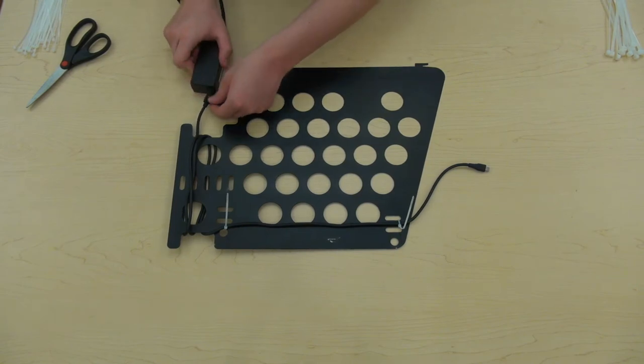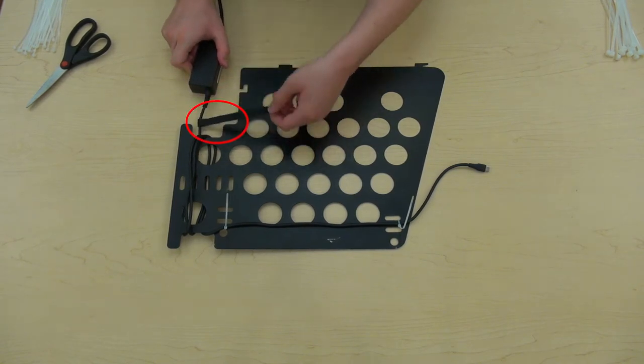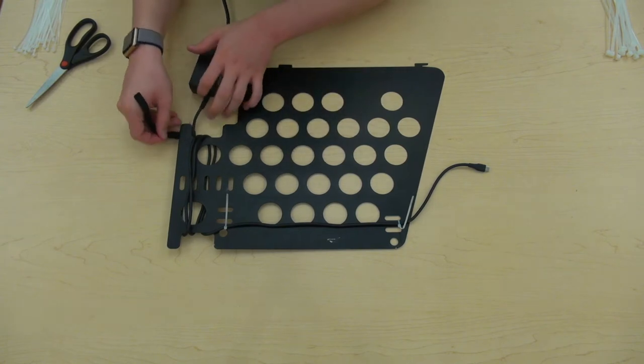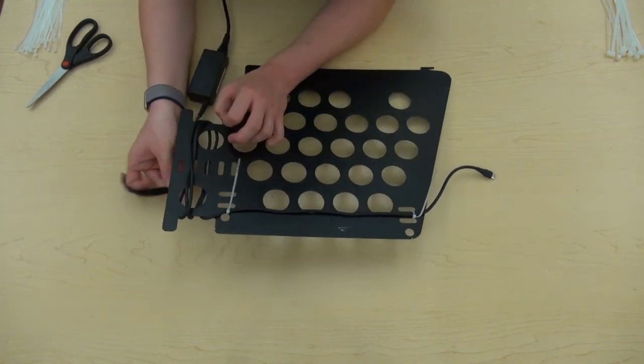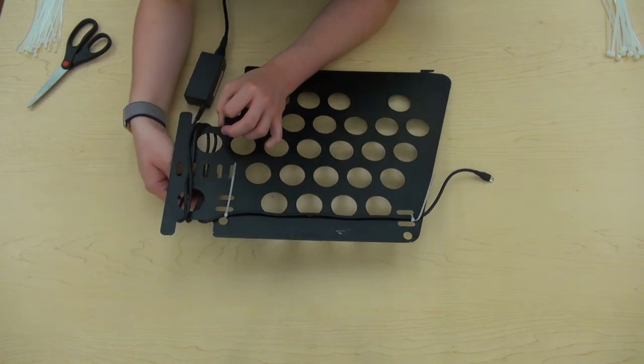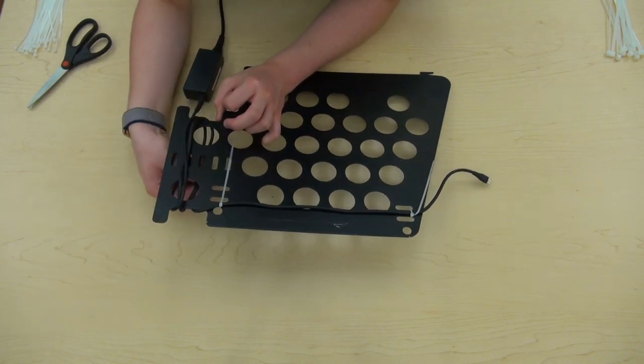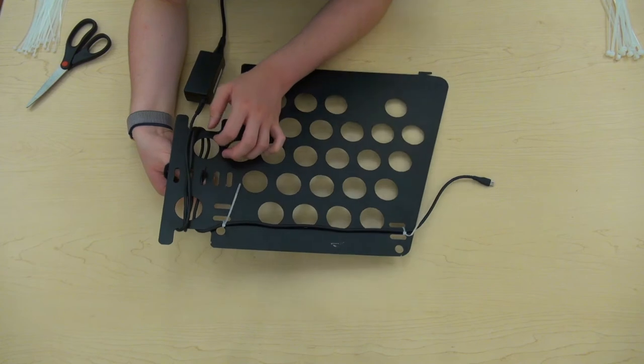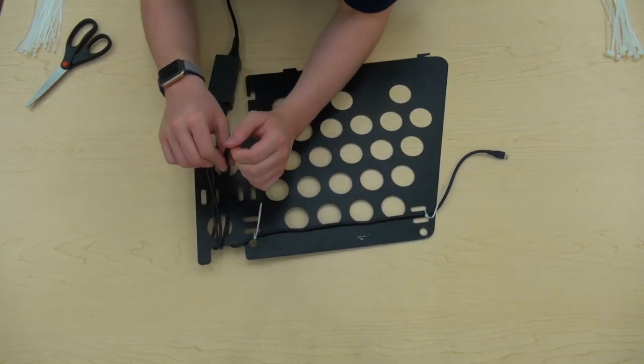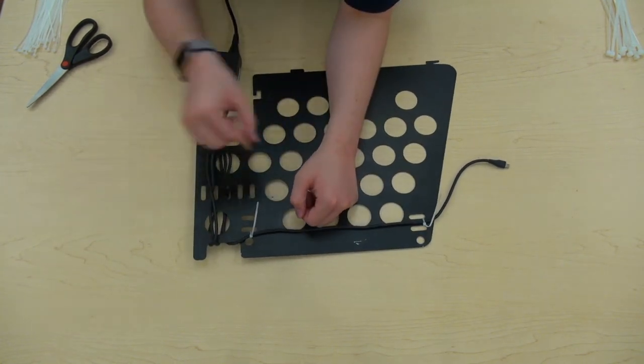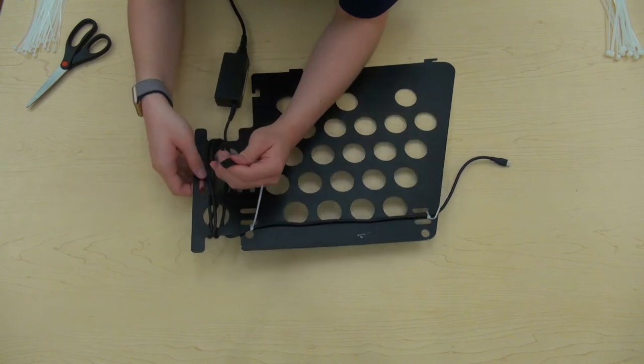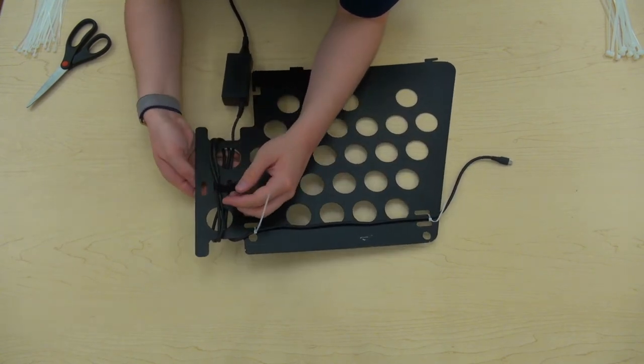If your cable has a velcro tie as shown here, now is the time to use this tie by wrapping it between two of the rear slots, ensuring you get all of the cables in the bunch. If your cable doesn't have a velcro tie, you can instead use another small zip tie. Just make sure you cut it when you're done.